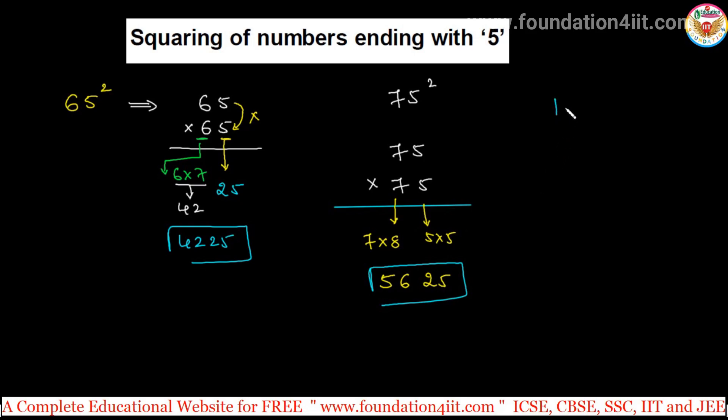Simple. The answer is 5625 for 75 into 75, without doubt, just by seeing we can write. For example, 105 into 105. Except this 5, the number is 10. So 10 into the next number 11, 10 into 11 is 110, then immediately write 25 beside this because 5 into 5 is 25. This is the combination for squaring numbers ending with 5.